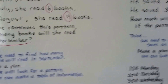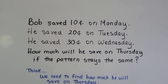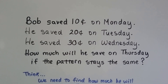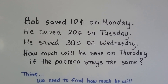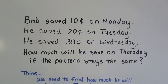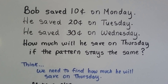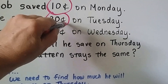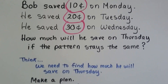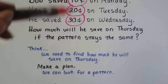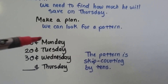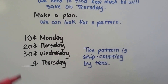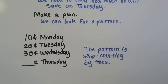Let's try another one. Bob saved 10 cents on Monday. He saved 20 cents on Tuesday. He saved 30 cents on Wednesday. So how much will he save on Thursday if the pattern stays the same? We need to find how much he will save on Thursday. We can circle the important words and numbers — the amounts of money are important. We need to make a plan and look for a pattern. 10 cents was Monday, 20 cents was Tuesday, 30 cents was Wednesday. This pattern is skip counting by 10s.